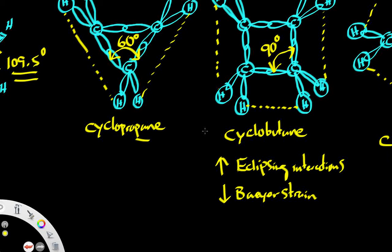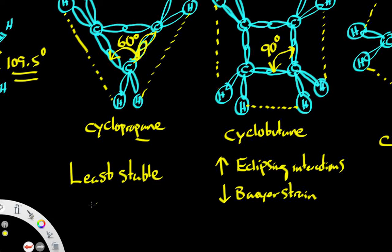With cyclopropane, puckering really doesn't have any effect whatsoever because these sigma bonds are so tightly bound to one another that there is really no room for flexibility. As a result, cyclopropane is going to be the least stable of these, due to an inability to pucker.